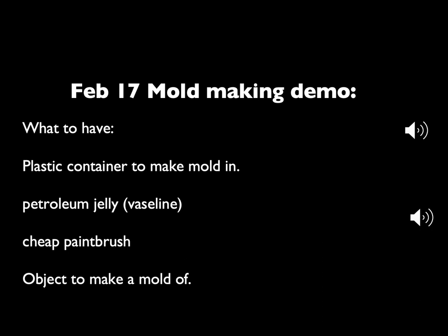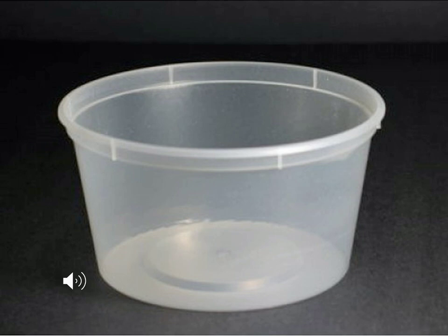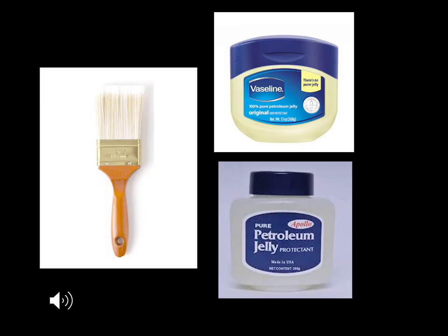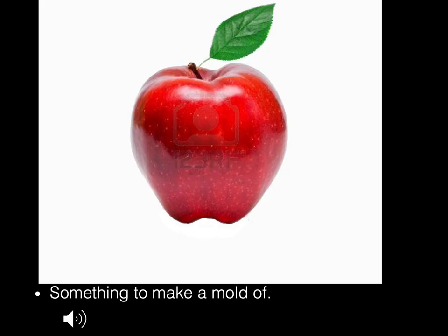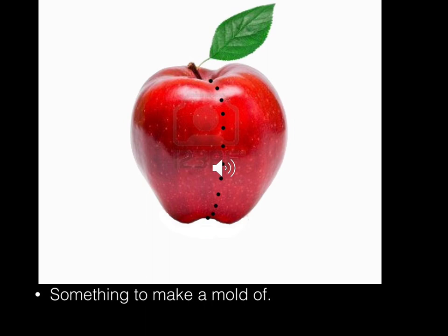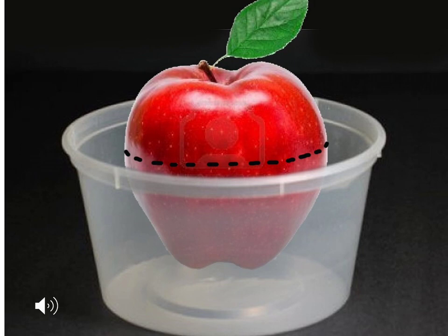On February 17th, we will be having a mold-making demo, and here are some of the things you will need: a small plastic container to make the mold in or to mix the material, petroleum jelly like Vaseline, a cheap paintbrush, and an object to make the mold out of. The container needs to be larger than half of your object. You'll learn how to divide that object in half — a little rubber duck or something like an apple that would fit the dish would work well. This would be the correct way to divide your apple in half and mold first one part and then the second part.